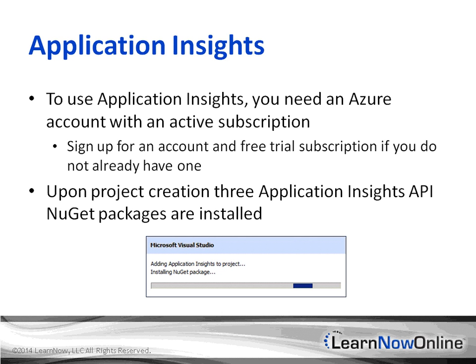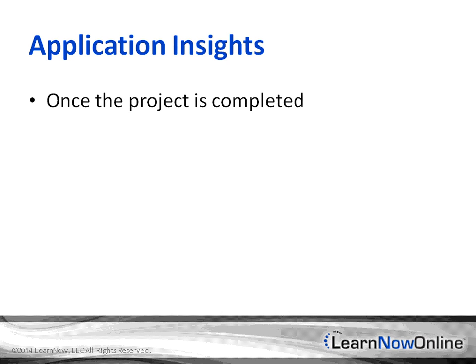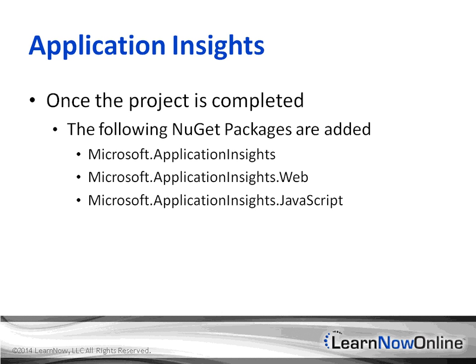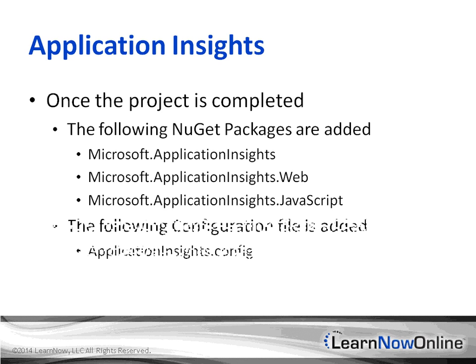When you add Application Insights to a project, when the project is created, it's going to add three Application Insights API NuGet packages. Those three packages are Microsoft.ApplicationInsights, Microsoft.ApplicationInsights.Web, and Microsoft.ApplicationInsights.JavaScript. Also, a configuration file is added to your project called ApplicationInsights.Config.